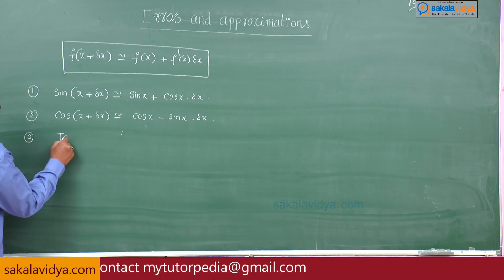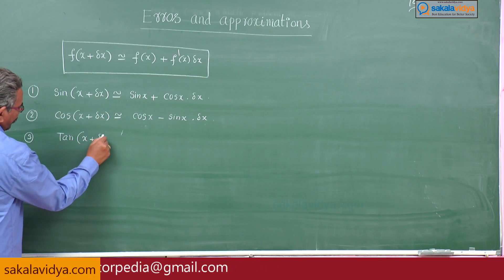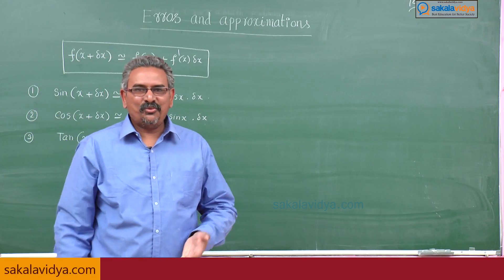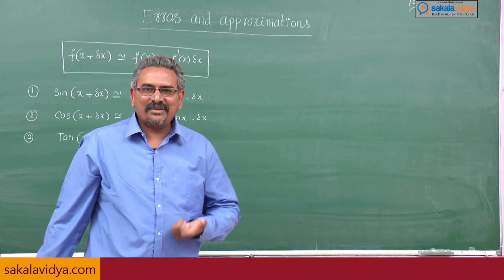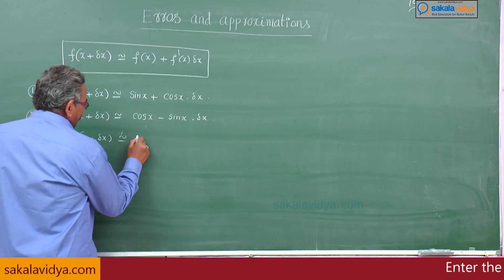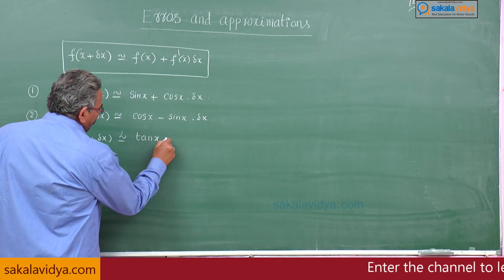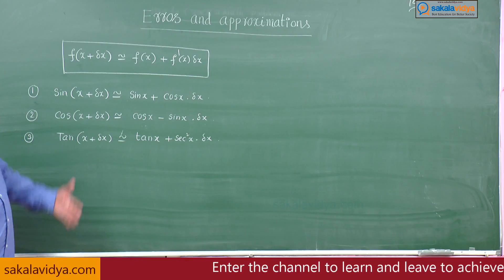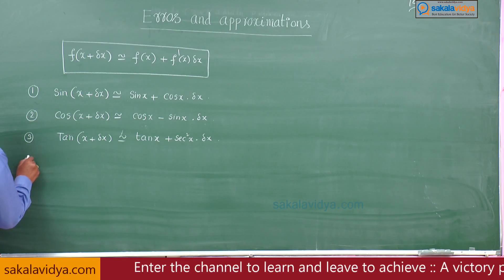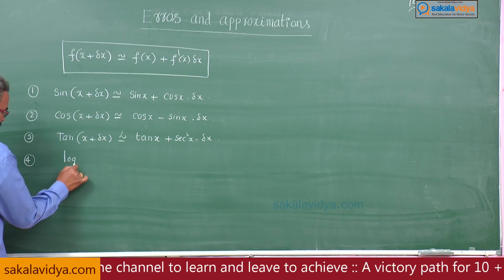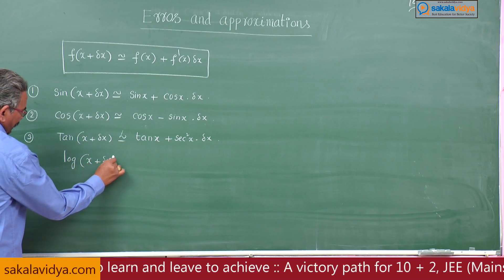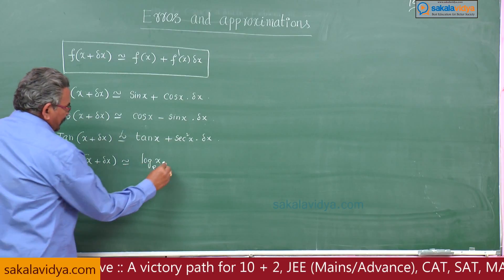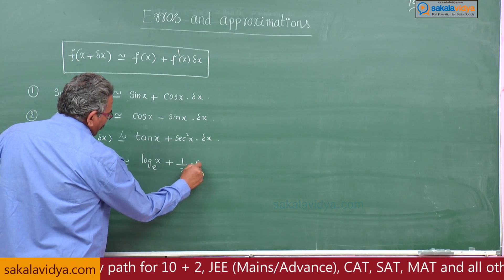Suppose if you want to find out tan of x plus delta x, you might have understood. That is tan x plus secant square x into delta x. Similarly in trigonometric ratios we can write. Suppose if you want to find out any logarithmic value: log base e of x plus delta x is approximately equal to log base e of x plus 1 by x into delta x.